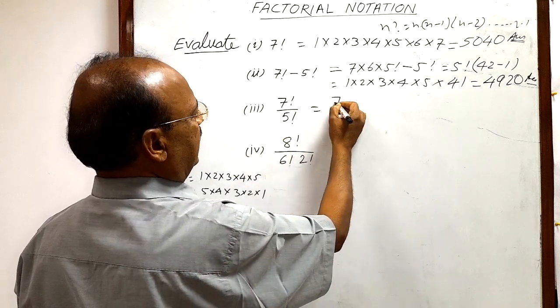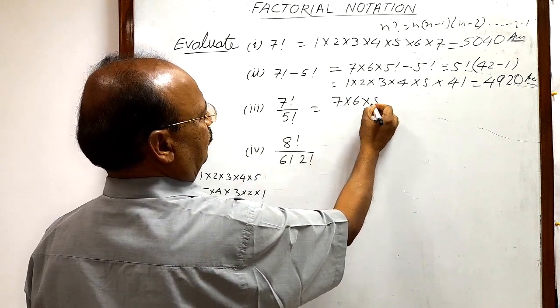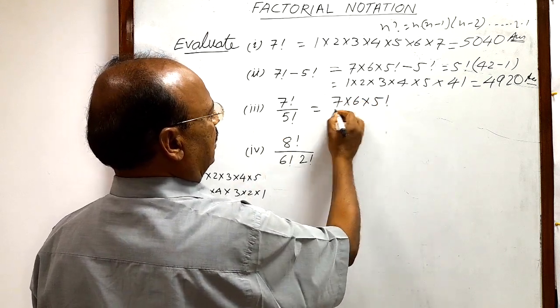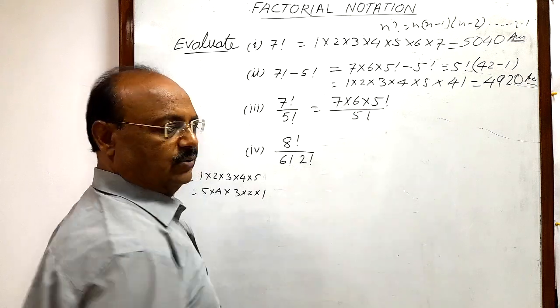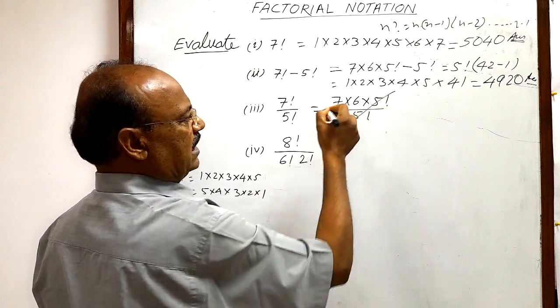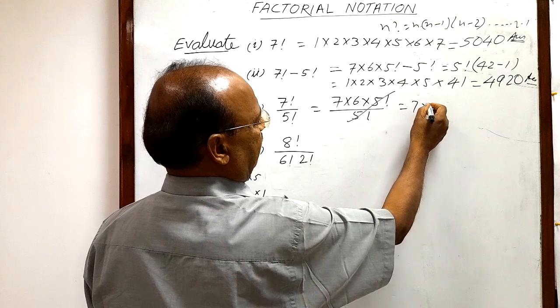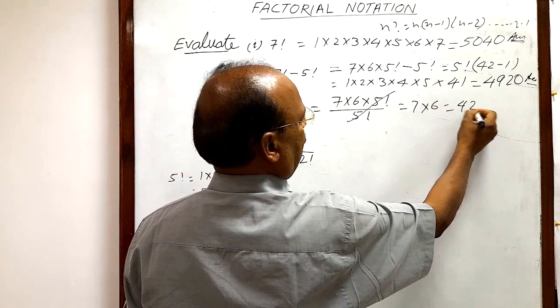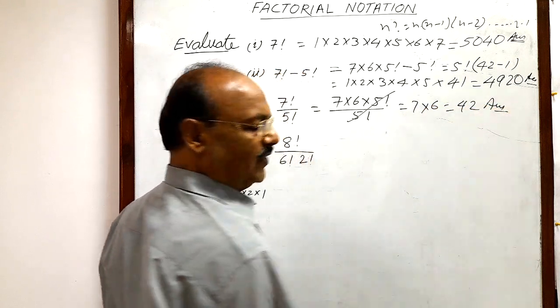Now the third question: 7! divided by 5!. The numerator 7! can be written as 7 × 6 × 5!, and the denominator is 5!. The 5! cancels out, leaving us with 7 × 6 = 42. So 7!/5! = 42.